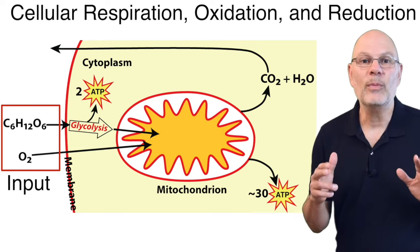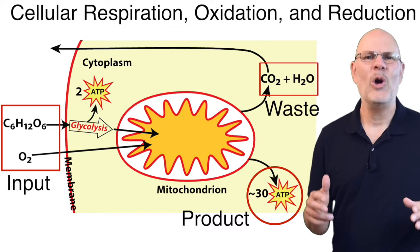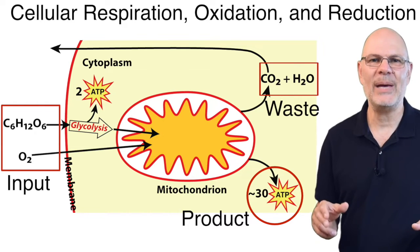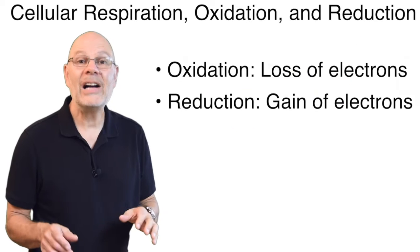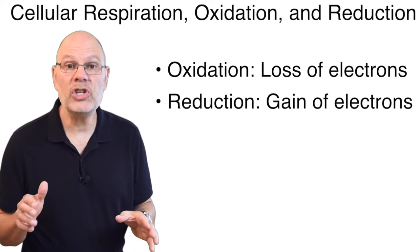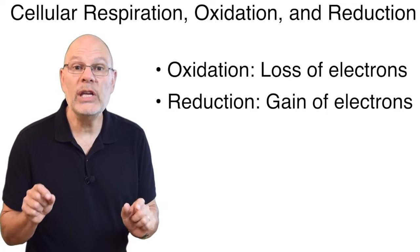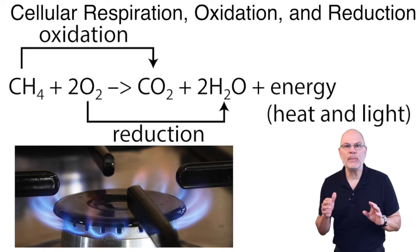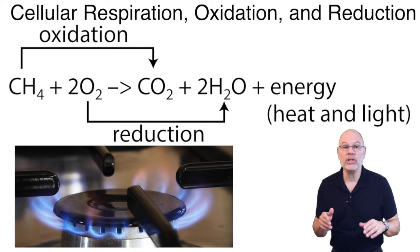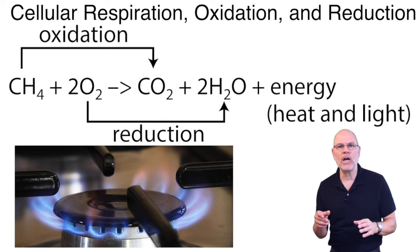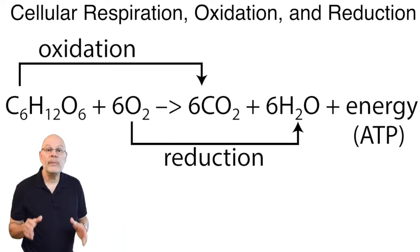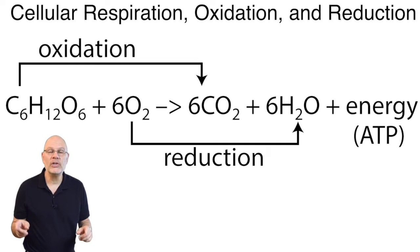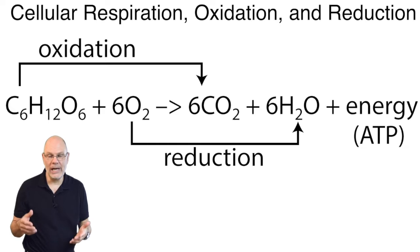To understand how we get from glucose and oxygen to CO2, water, and ATP, we have to understand two chemistry-related concepts: oxidation and reduction. Oxidation means the loss of electrons. Reduction is the opposite — it's the gain of electrons. These two processes are always paired. When you cook on a gas stove, the methane is being oxidized as it loses electrons and hydrogens, resulting in carbon dioxide. The oxygen is being reduced as it gains electrons and hydrogens, becoming water, and lots of heat and light are produced. Similarly, during cellular respiration, glucose is oxidized to carbon dioxide and oxygen is reduced to water, and the energy is used to create ATP.